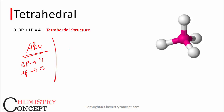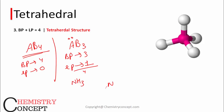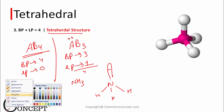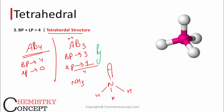There is one more case: AB3 with one lone pair — bond pairs are 3 and lone pair is 1. That is the case of ammonia. Nitrogen forms 3 bonds and has 1 lone pair. This is tetrahedral geometry but the common name given to the structure of ammonia is pyramidal.